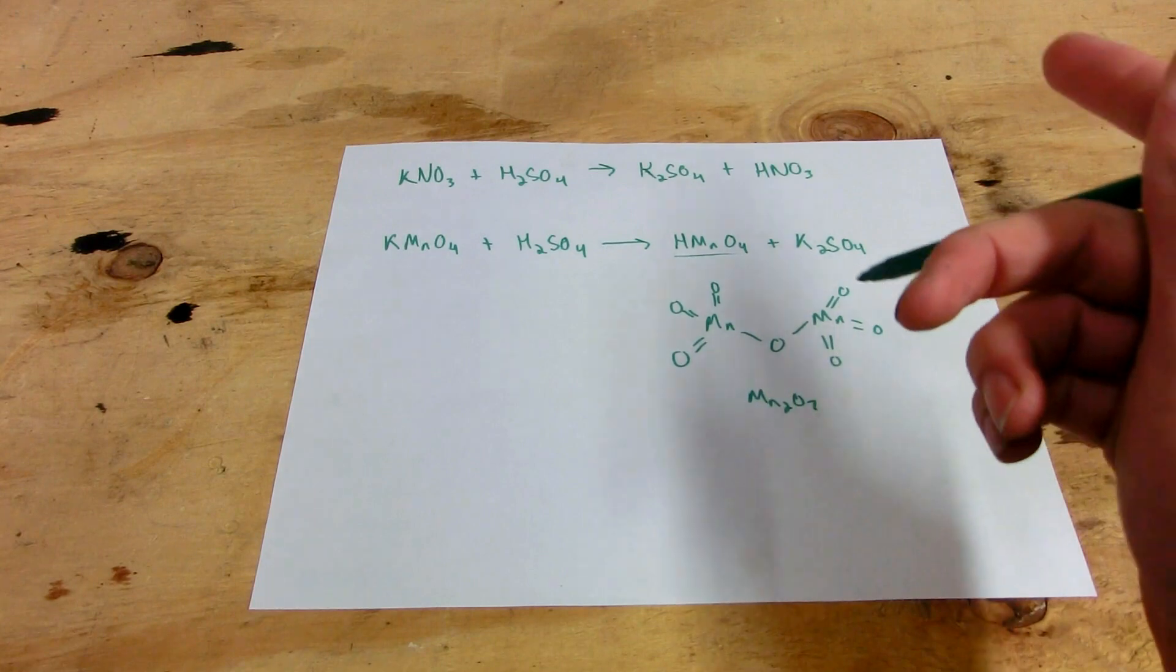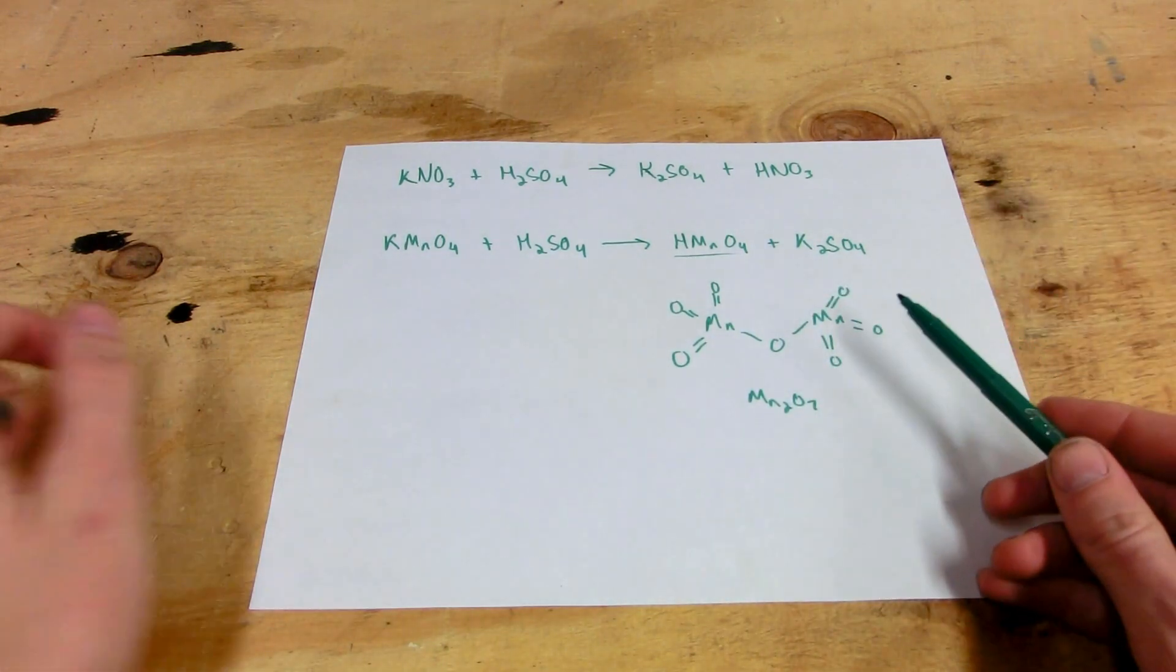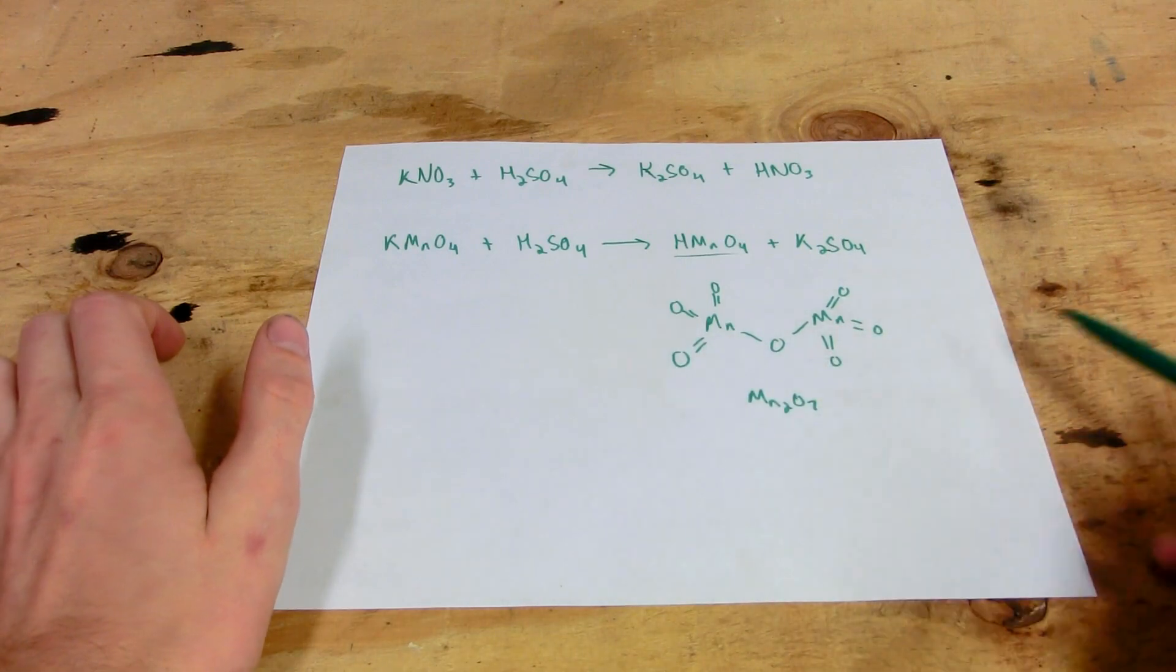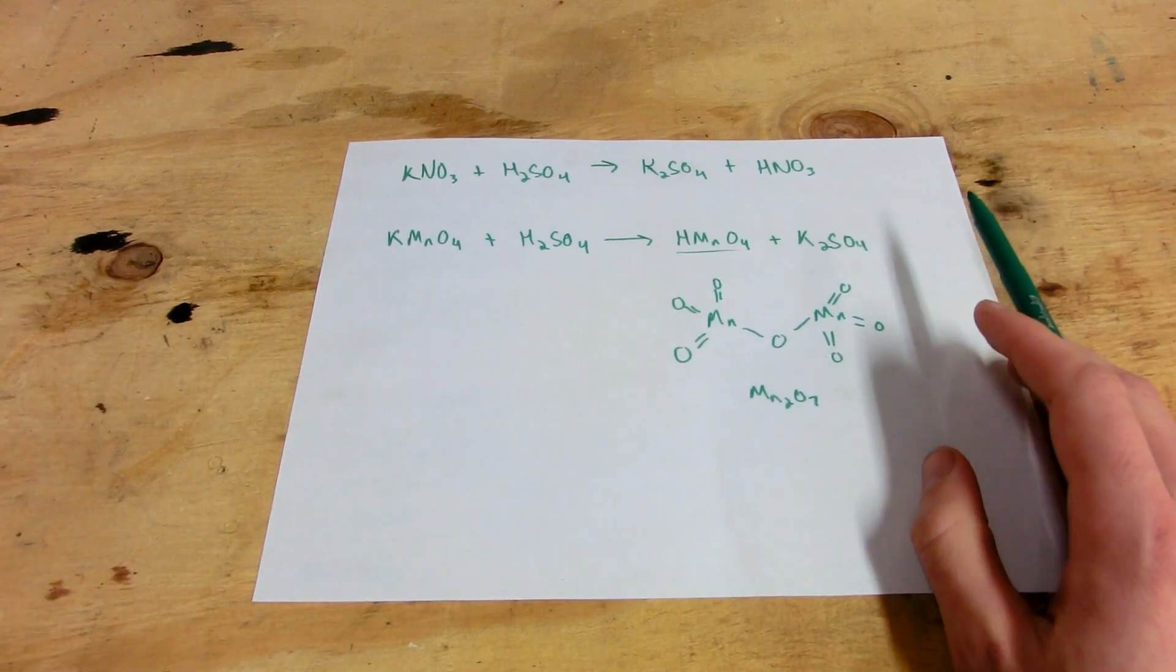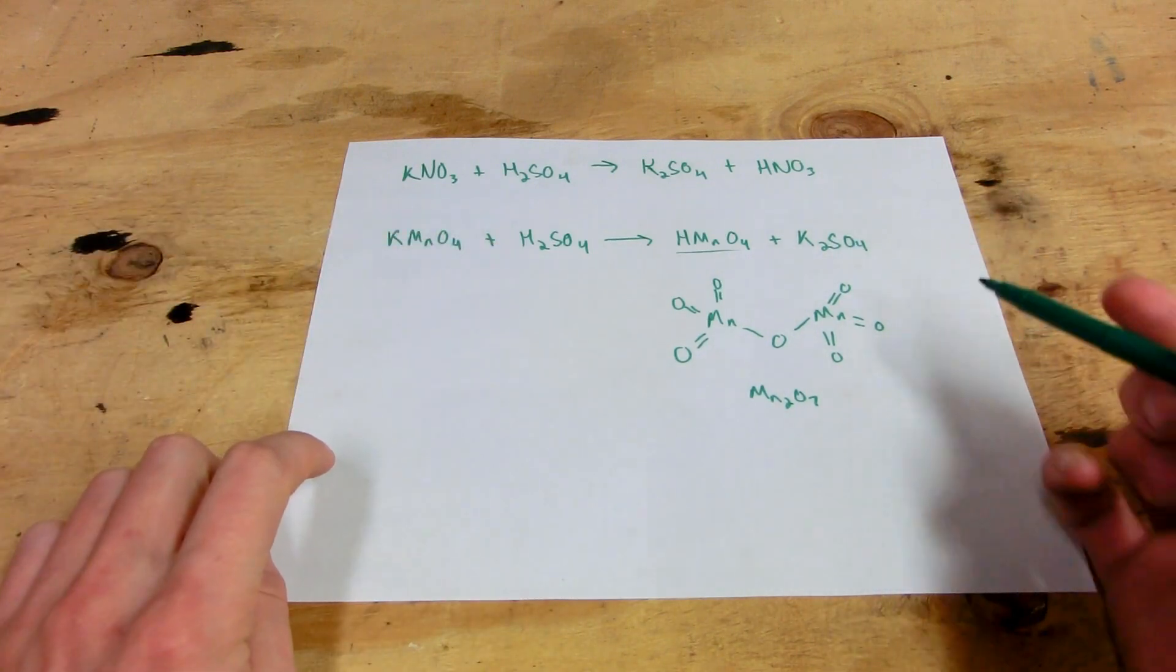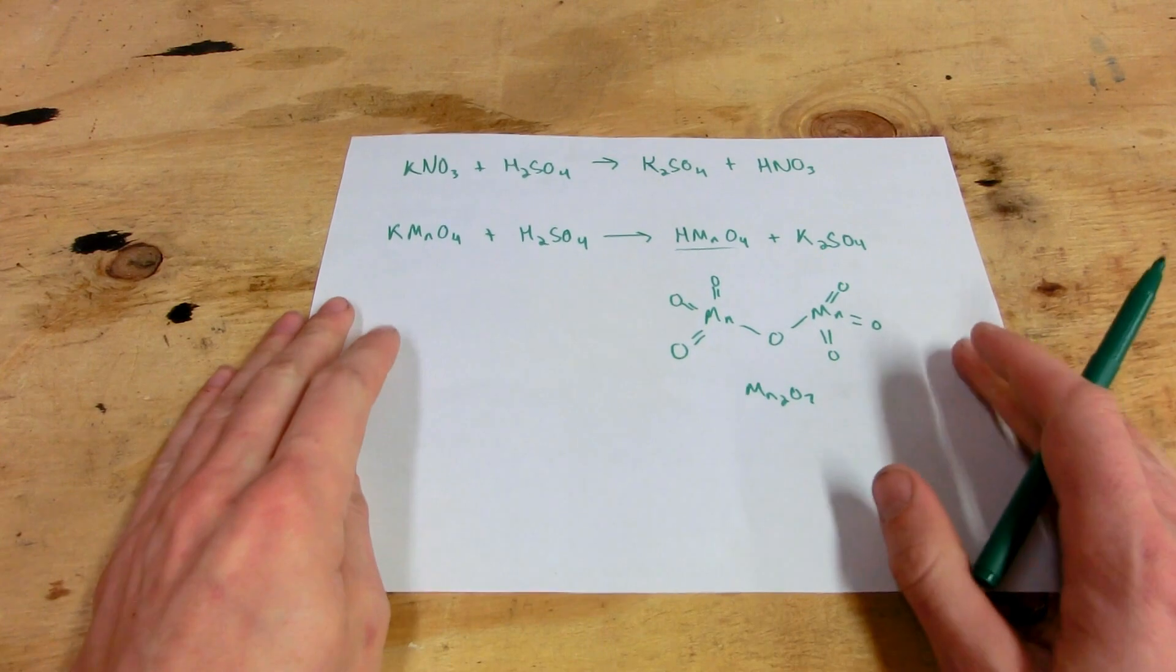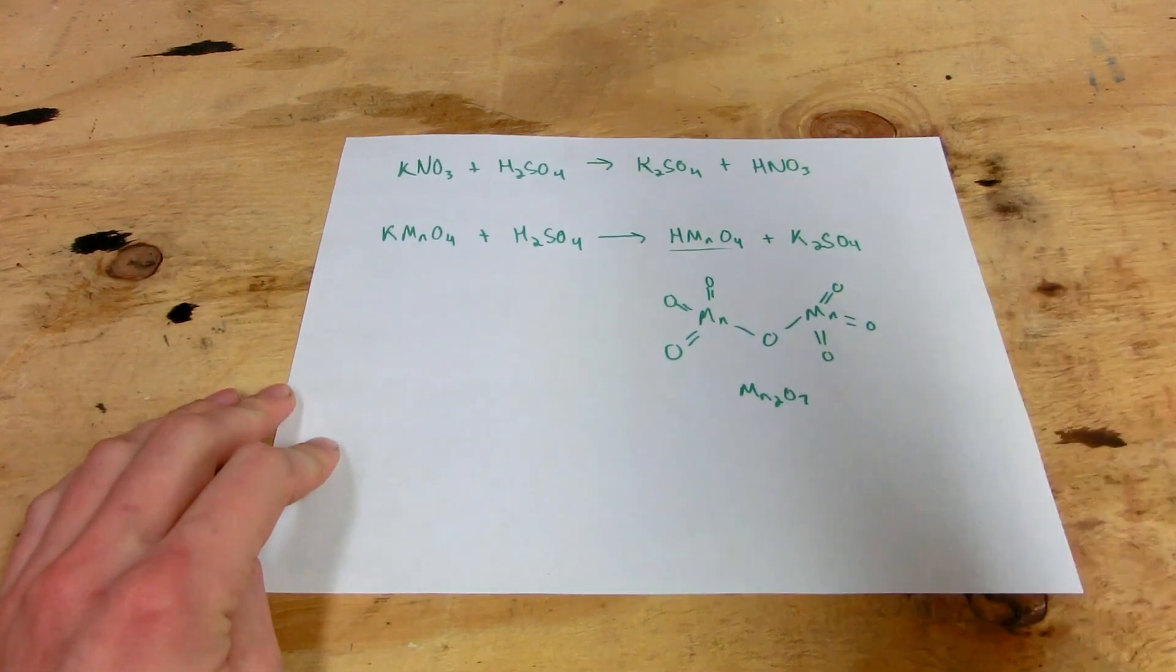So anyway, we're going to make some manganese heptoxide because as you know, manganese in the plus seven oxidation state, it's kind of unstable, wants to give away a lot of its oxygen and will do so very simply in the presence of organic compounds, which will of course oxidize the organic compounds and reduce the manganese heptoxide to manganese dioxide in a spectacularly violent reaction. So we are going to go to the lab and do that right now.